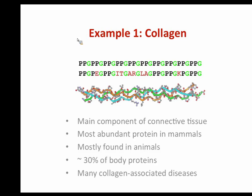Collagen is essentially a triple helix. Collagen repeats can be very similar or even identical, as in some sequences, but they can also be very diverged across different collagen types. Nevertheless, you can see some very strongly fixed positions. It is a main component of connective tissues, the most abundant protein in mammals, and found also in viruses. There are many collagen-associated diseases, which again points to the importance of studying such proteins.